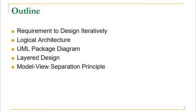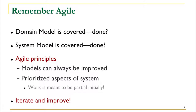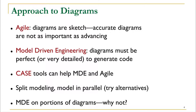Using architectures such as the model-view separation principle, we can arrange things in a better way. By now we have covered the domain model and the system model, but one thing we must remember is the agile principles. Agile principles say that models can always be improved and we must prioritize aspects of the system. In each iteration we must decide which task is more important, and after prioritization we can partially and gradually grow our system.